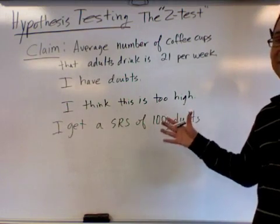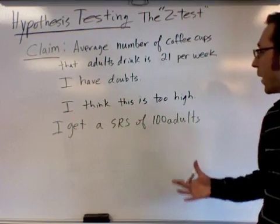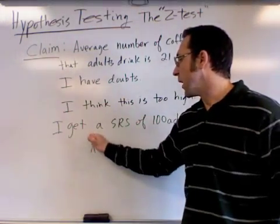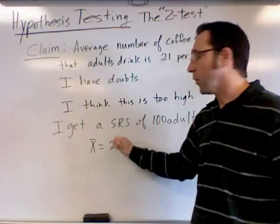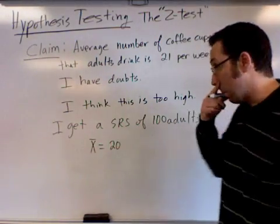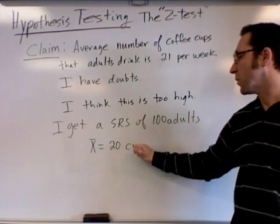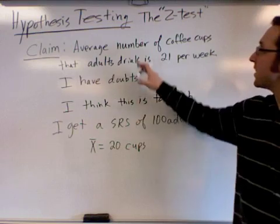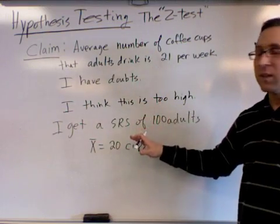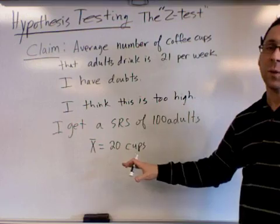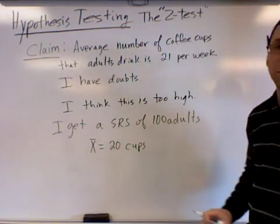I can get a statistic from that group of 100, and suppose that I get that the average from the 100 comes out to be 20 cups. Now that's less than the 21, but is it so far less where I can actually say this is probably false?